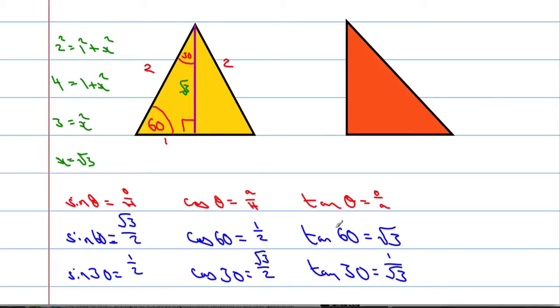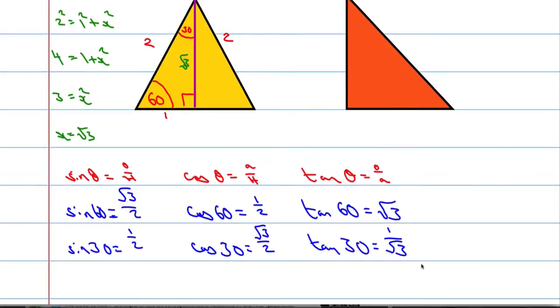Wonderful. So we've got sine of 60, cosine of 60, tan of 60, and also we've got the same trig ratios for an angle of 30 degrees. I'd also like to know what the results are for sine of 45, cosine of 45, and tan of 45.